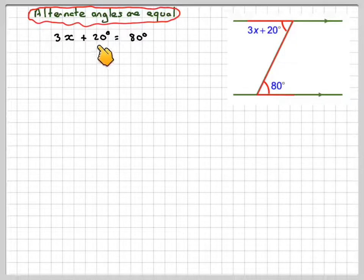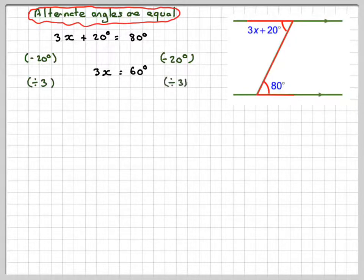First of all, the opposite of adding 20 is to take 20 from both sides. If we take 20 from this side we get 3x, take 20 from this side we get 60, and then divide both sides by 3. If we divide by 3 on this side we get x, and if we do 60 divided by 3 we get 20.